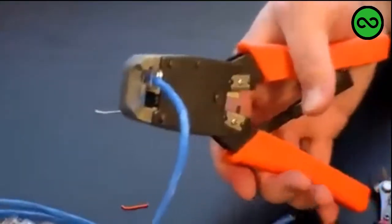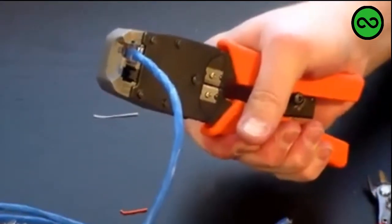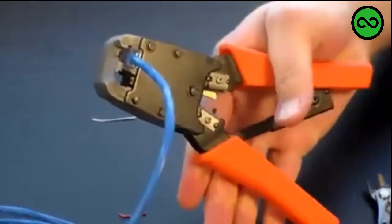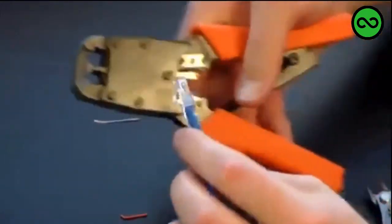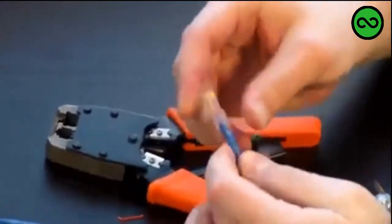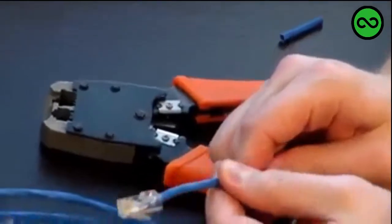Once you do that, you just want to squeeze the crimping tool closed. There we go. All right, now make sure you just go ahead and unclip it from the tool, and there you have it, good to go, an ethernet cable nicely crimped.